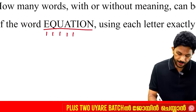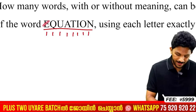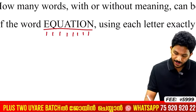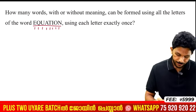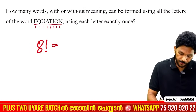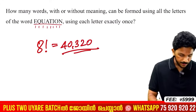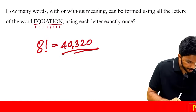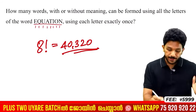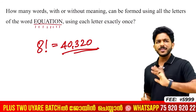Counting: E, Q, U, A, T, I, O, N — that's 8 letters. This is not a case of repeated letters, so it's simple: 8 factorial = 40,320. Check the calculator — it's 40,320. Correct!